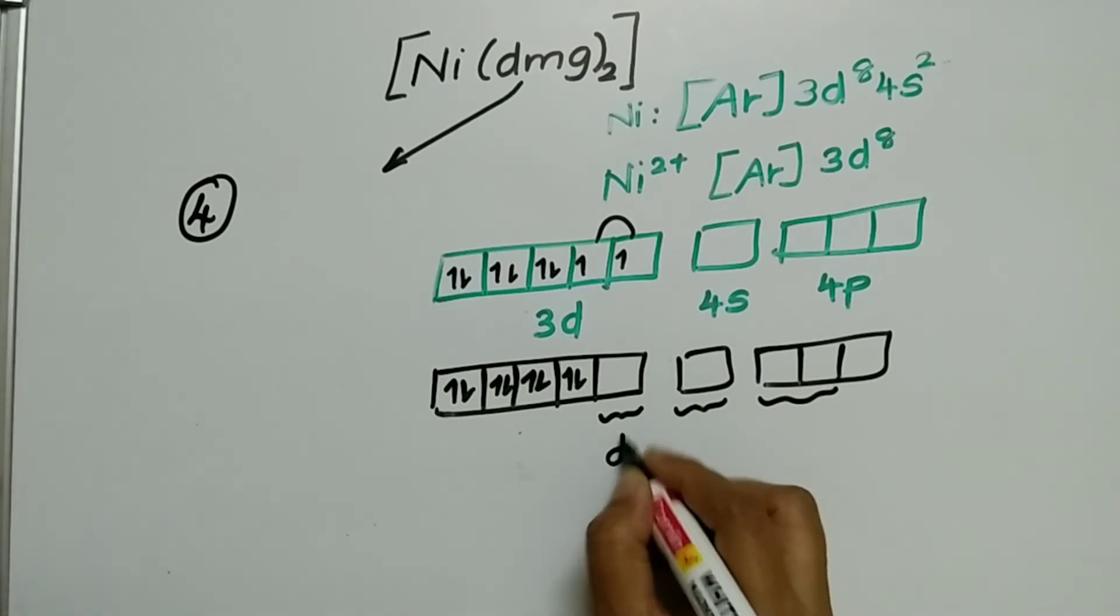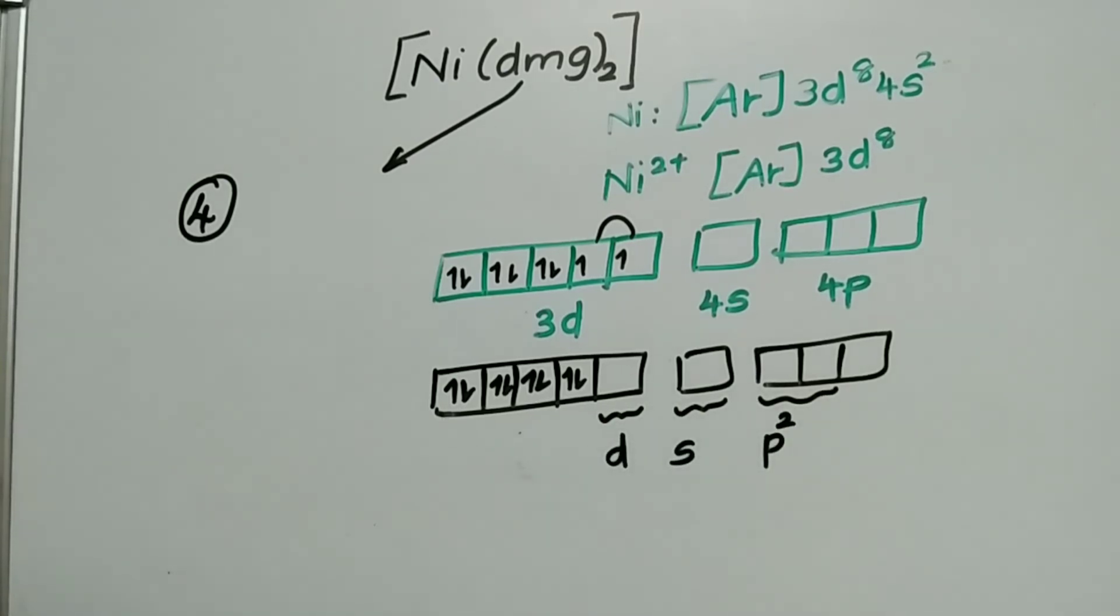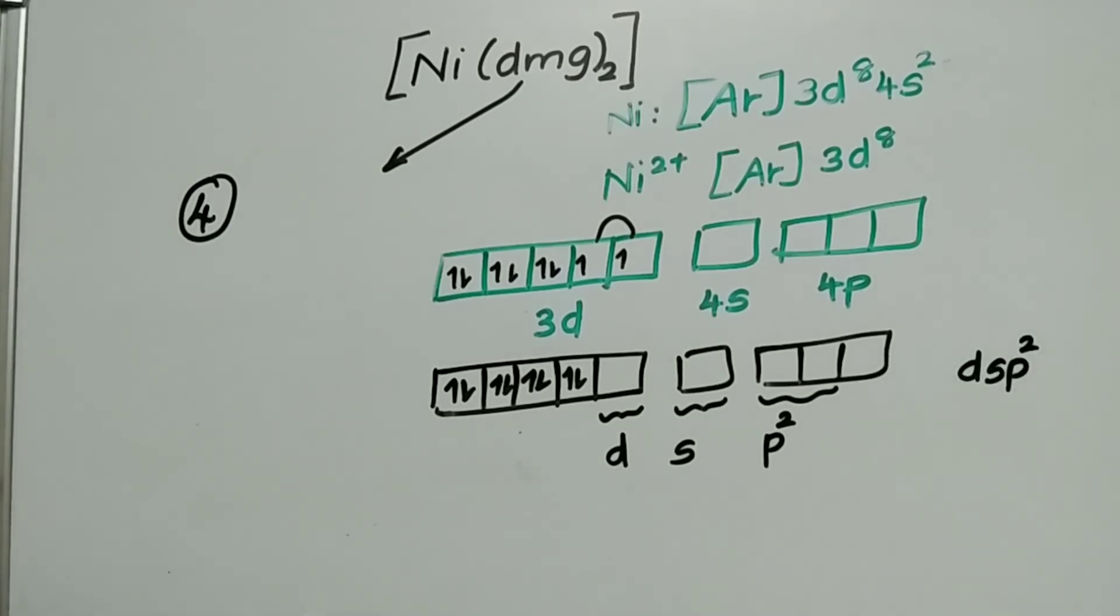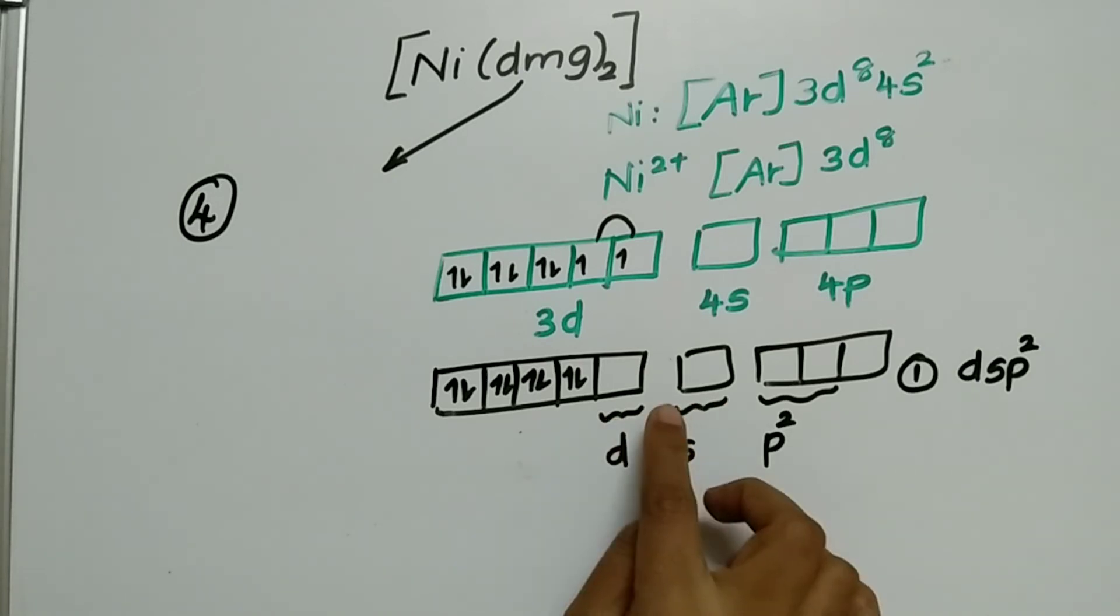What is it? dsp². So what is the hybridization here? dsp² is the hybridization. See why I took this example is just to explain you that vacant orbitals, how many we need seeing this 2 DMG. It does not mean that only 2 are required but each DMG it has 2 donor sites. So 2 DMG will have how many donor sites? 4. So we need 4 vacant orbitals. We are finding the hybridization dsp².